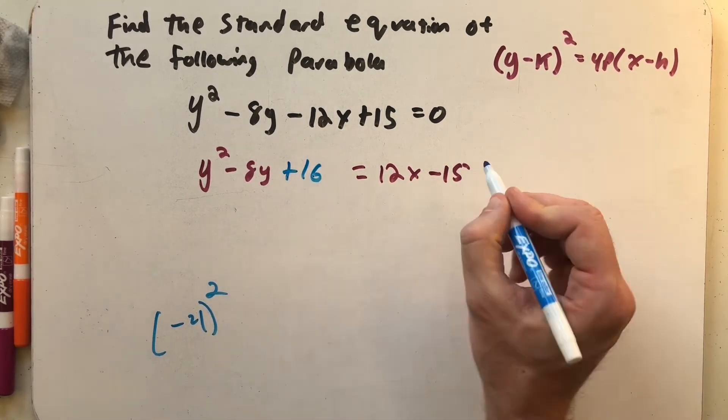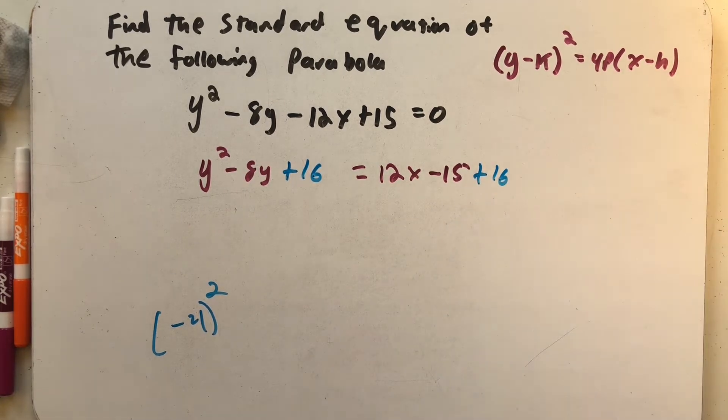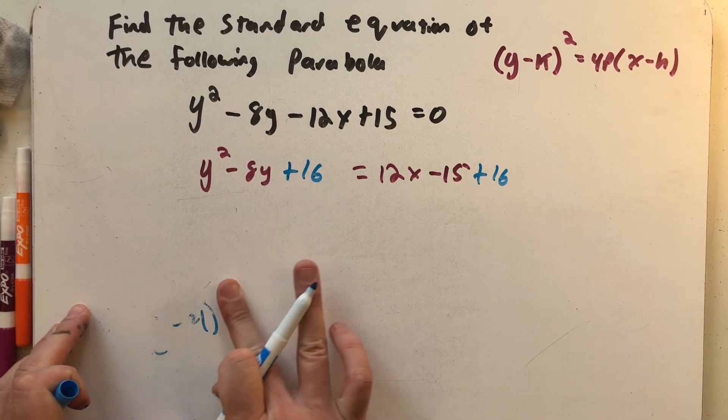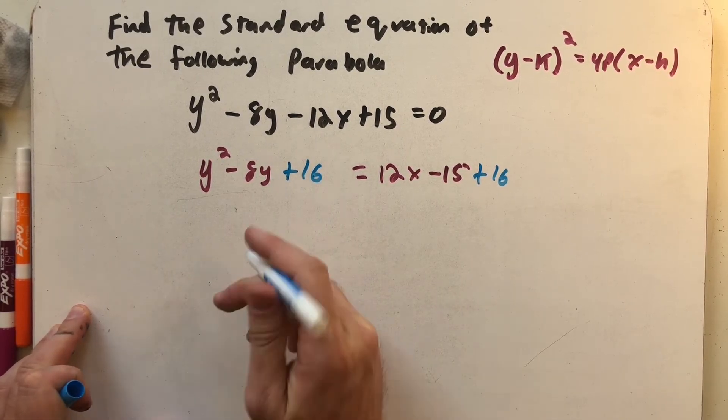And then I do the same thing to both sides, because that's what we do with equations. And so I've added 16 to both sides. And now I'm ready to write this down in its standard form. So let's see here.